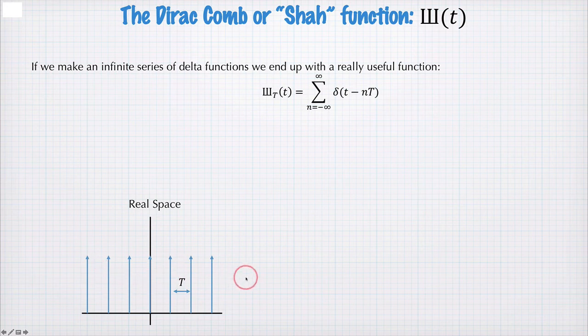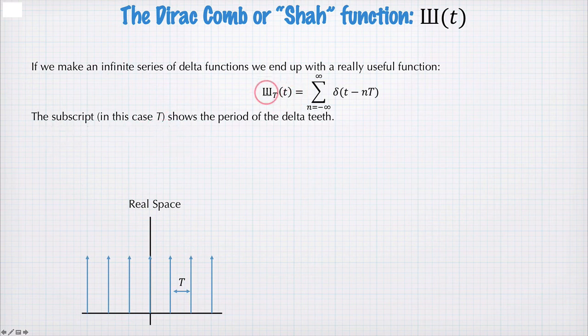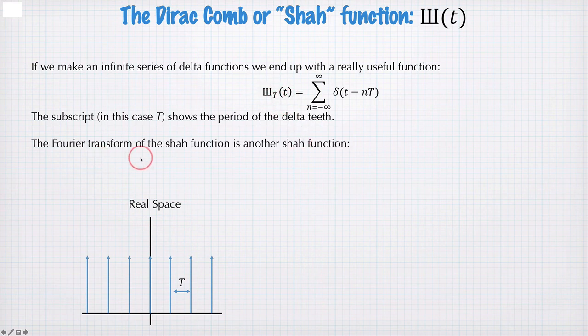So this would look like a series of pulses arriving at a detector, for example. And the subscript T here is the spacing of the teeth. So this is how we incorporate the spacing of the teeth into the definition of the SHA function.